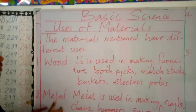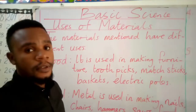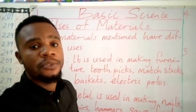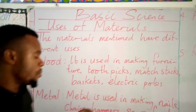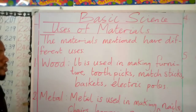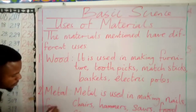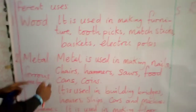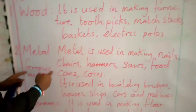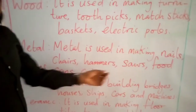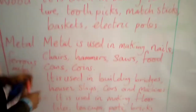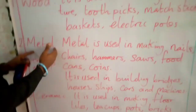Number two: metal. Metal is used in making nails. Go to the workshop and you see your carpenter using nails to bind two pieces of wood together. Nails are produced from ferrous metal. Remember we have two groups of metals — ferrous metal and non-ferrous metal. We also have chests, armors, saws, food cans, and coins. We can get all of these from metal, either ferrous or non-ferrous.